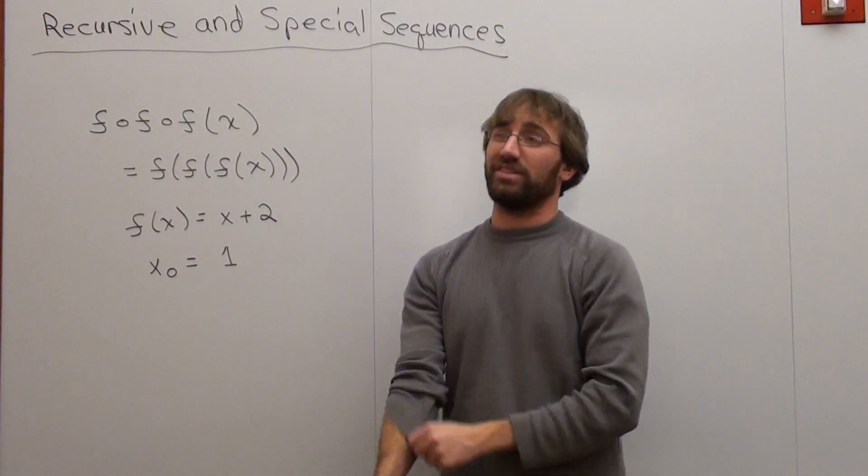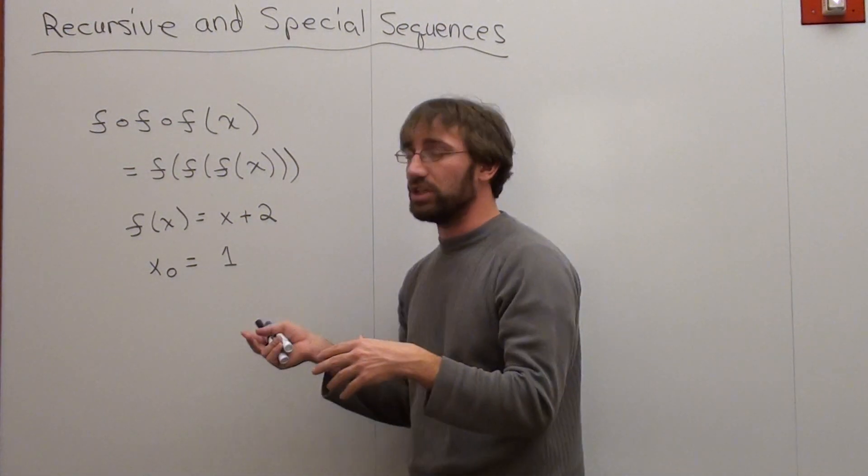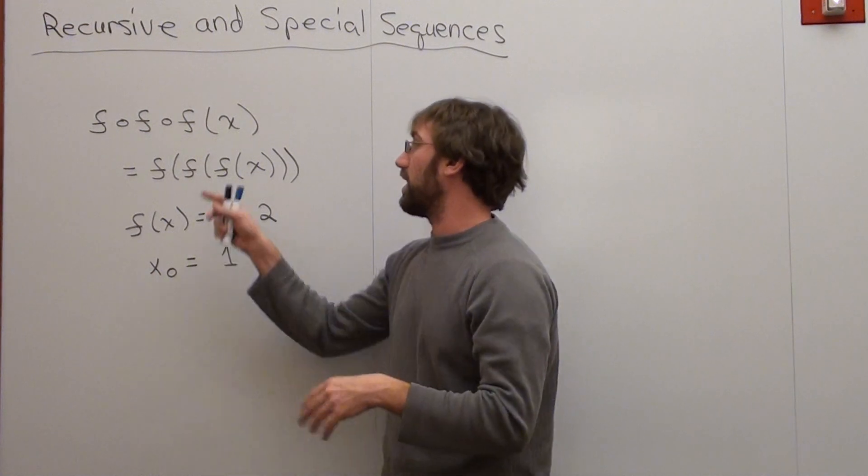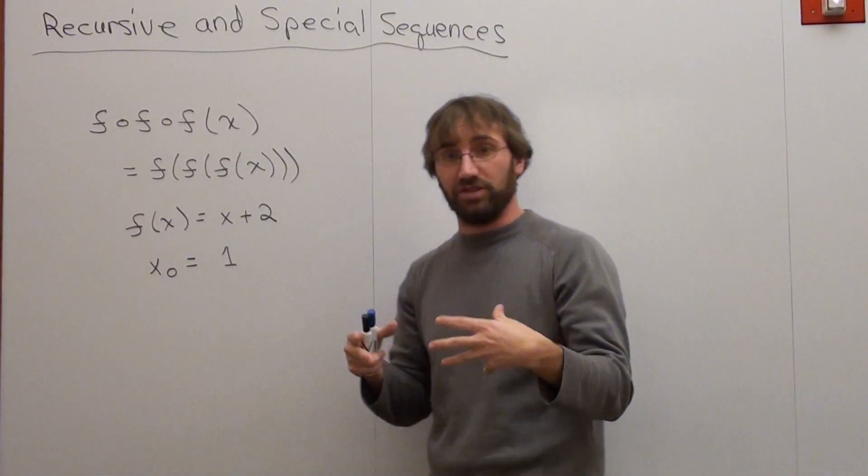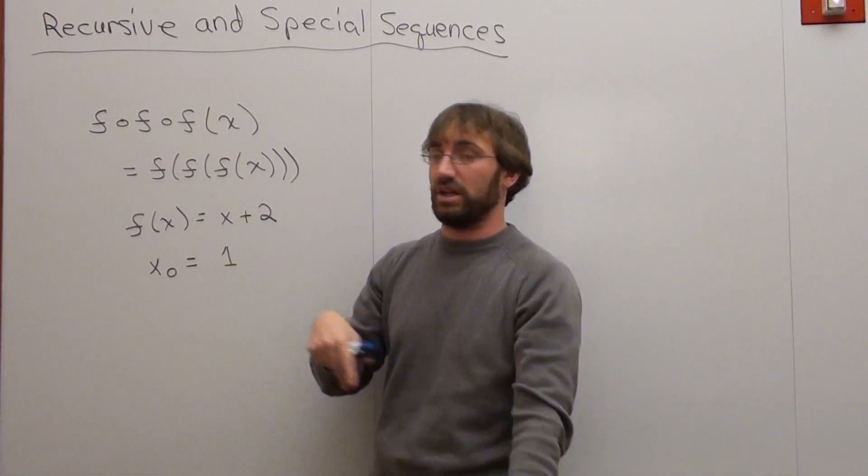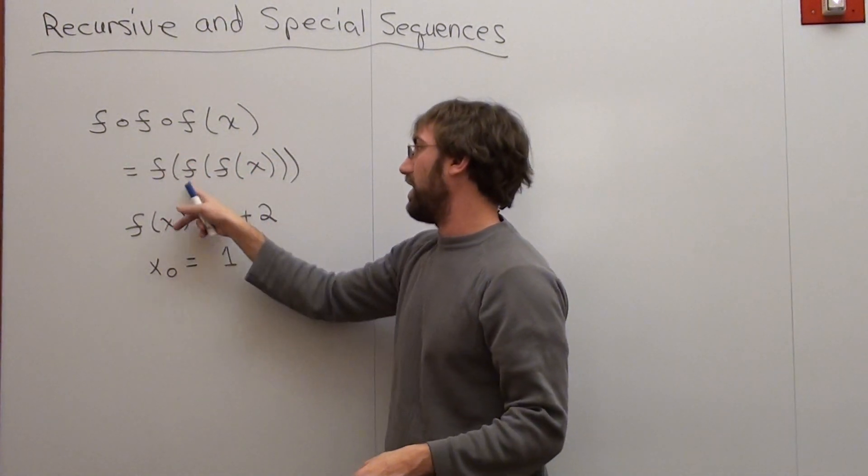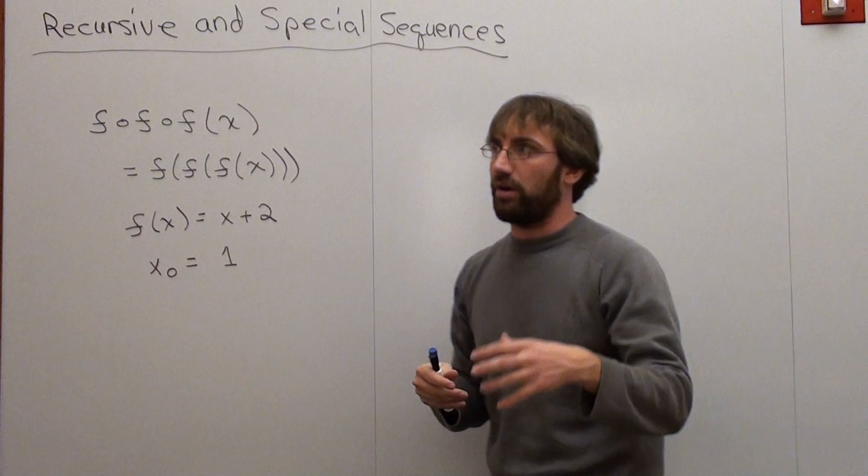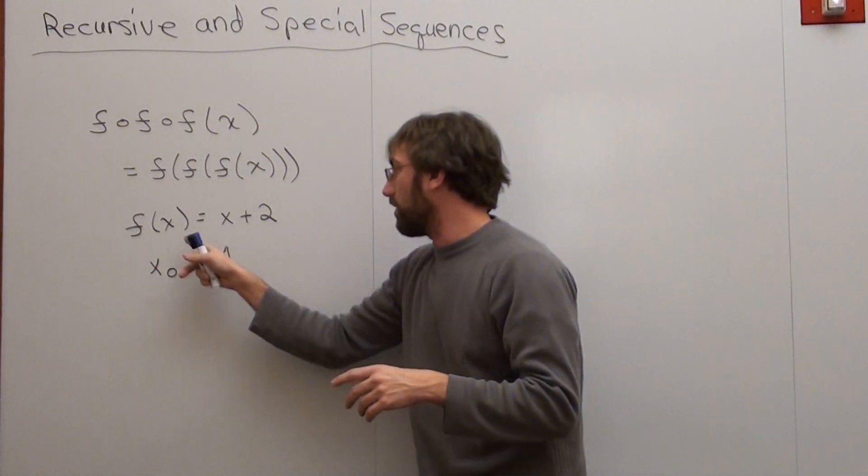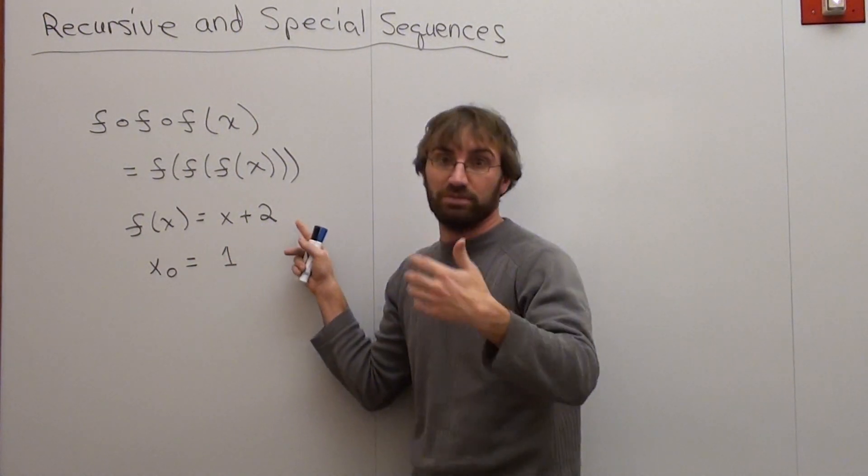So if you're familiar with finding inverse functions, like f of g of x, what we're going to do is we're going to do a composite function, but we're going to do a composite function upon itself, f of f of f of x, which also can be written f, f, f of x, where I've got this hypothetical where I've got a function that's equal to x plus 2.